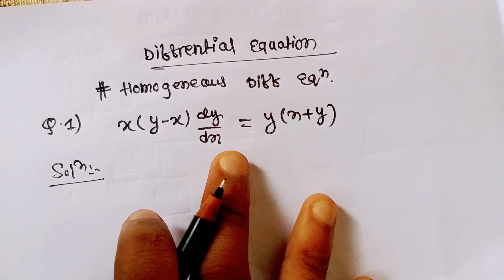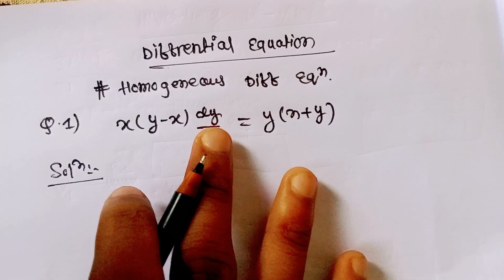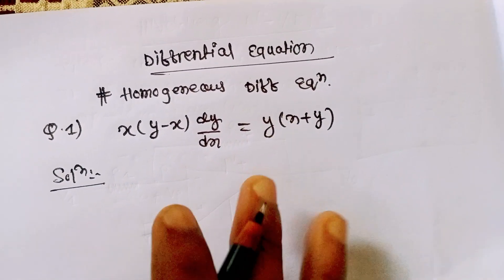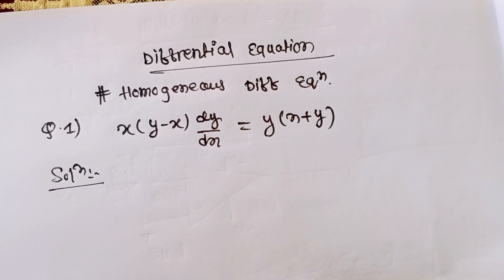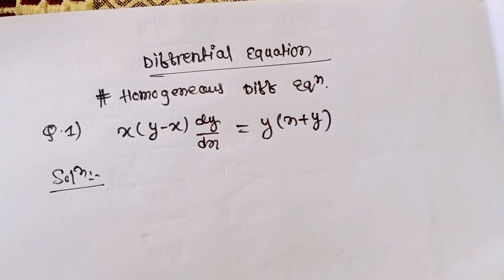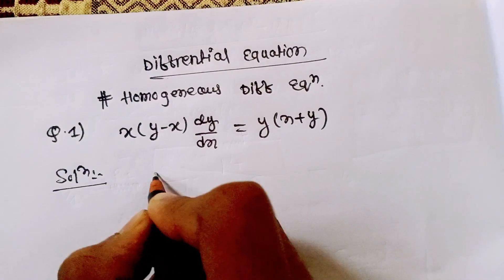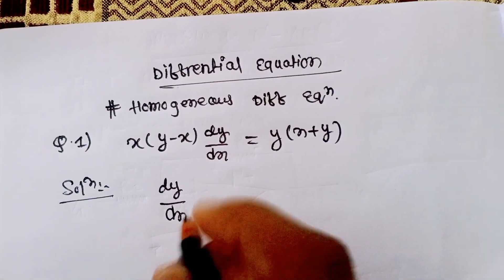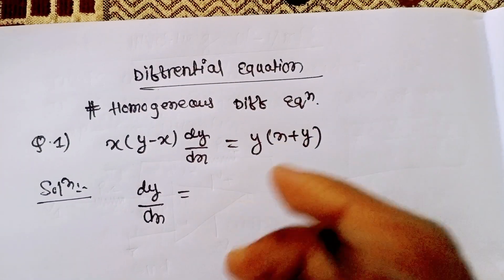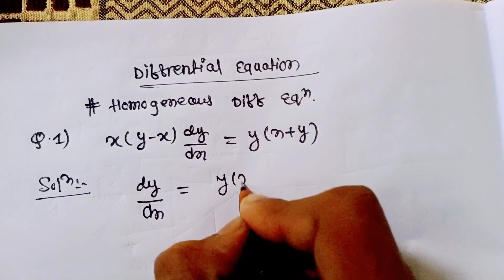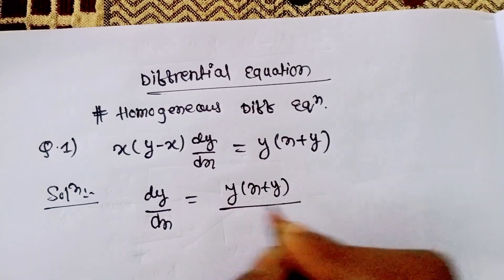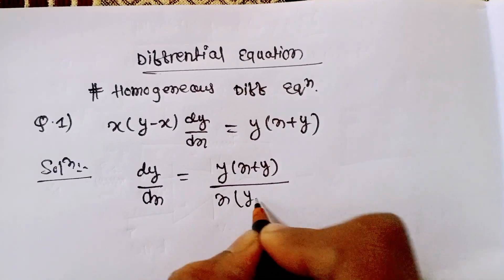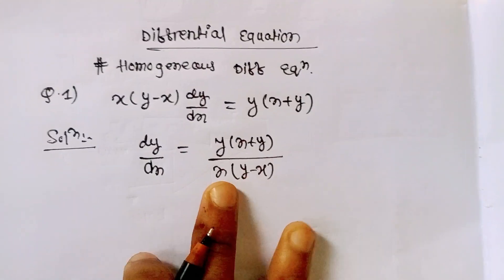As I told you earlier, this is a form of homogeneous differential equation. Now the question comes: how will we understand that the given equation is in homogeneous differential equation form? For that, you have to separate things. For example, dy/dx को हमें एक तरफ रखना है, and y(x+y) को bracket में नीचे लेंगे, upon में y minus x।